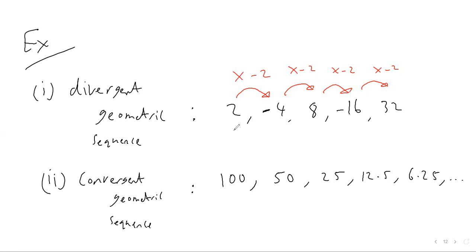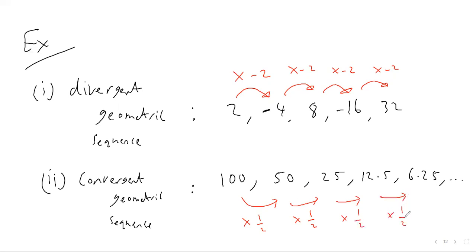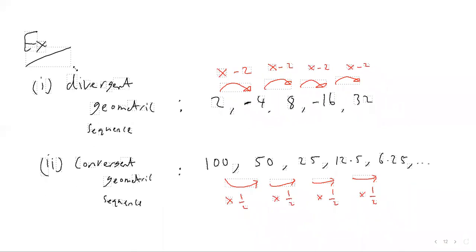This next one is a convergent geometric sequence. We're multiplying each term by a half, so the common ratio is 1/2. This sequence is convergent because the terms eventually converge — and in fact, all convergent geometric sequences converge to zero. The terms get smaller and smaller, and the limit is zero.